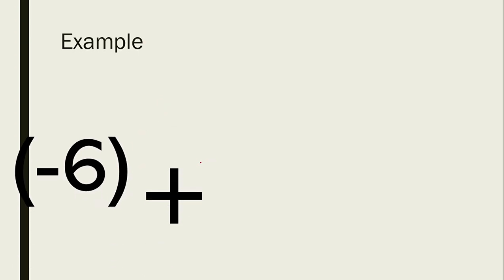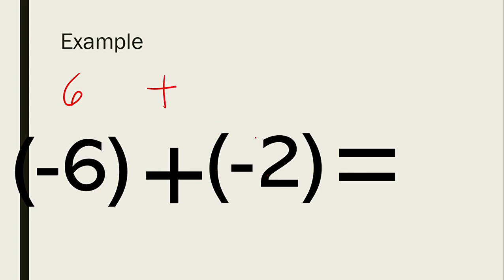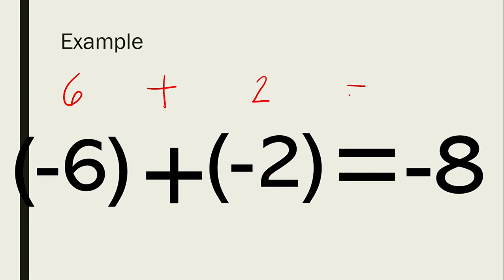Next, we have negative 6 plus negative 2. We have to add their absolute values. The absolute value of negative 6 is positive 6, plus the absolute value of negative 2, which is positive 2. Therefore, the answer is 8. However, we need to copy the same sign, and as you can see in our given, the signs are negative. Therefore, the answer should be negative 8.